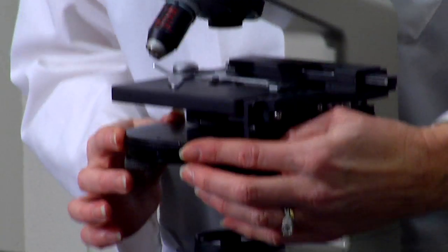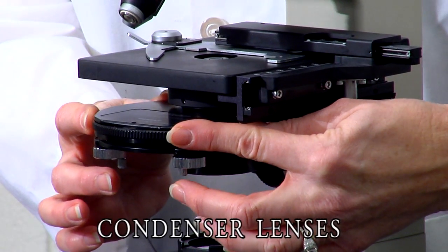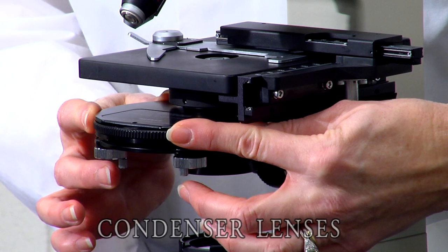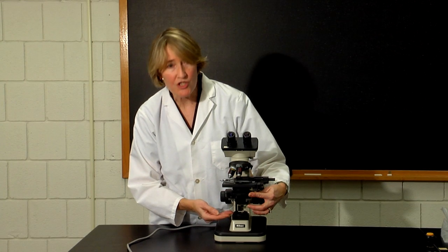Below the stage is a rotating disc which contains the condenser lens systems. This is the third set of lenses. These don't magnify the object, but rather concentrate light from the illumination source below, so that it shines onto the object in a way that enhances the illumination of the specimen.